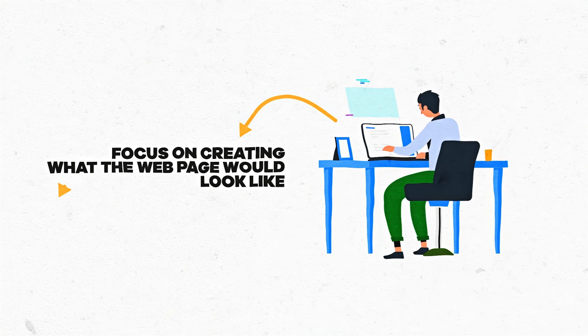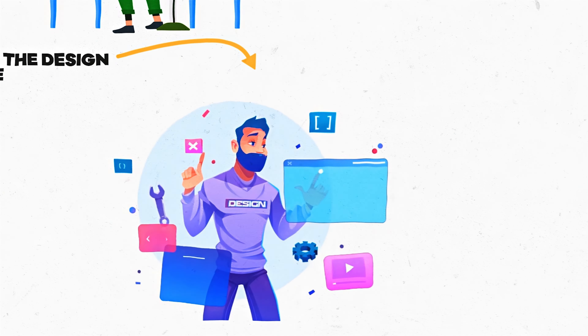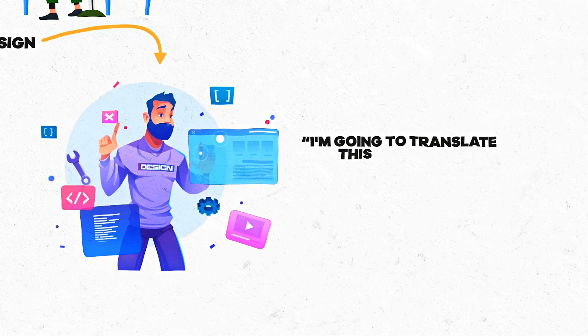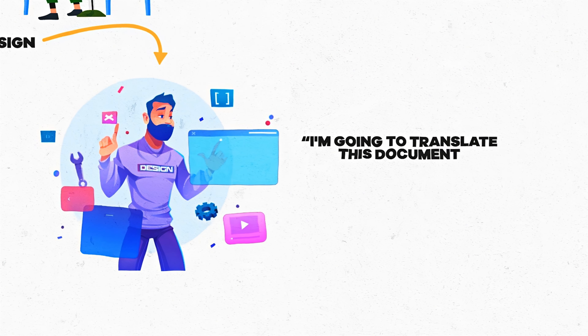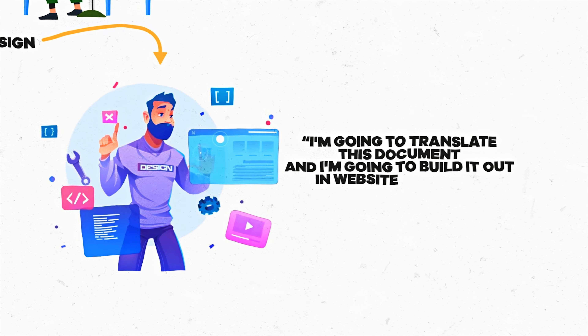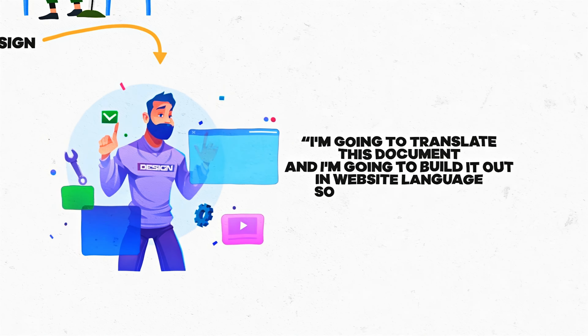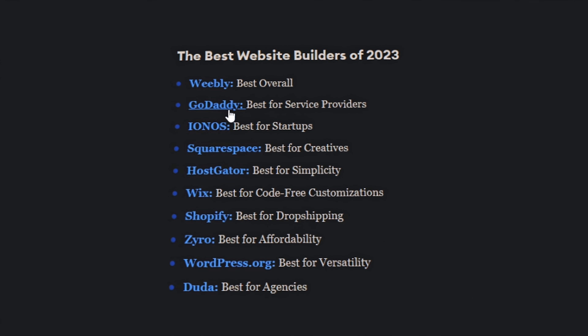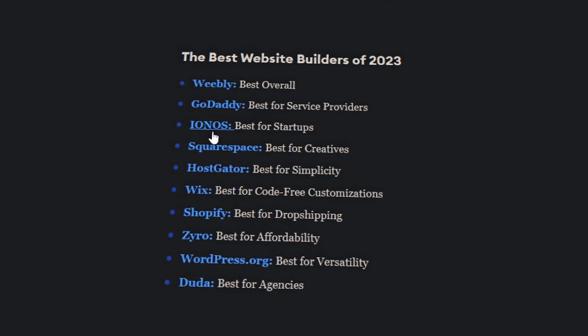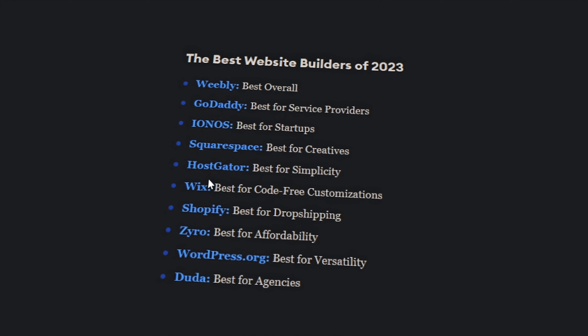It used to be that the web designer would solely focus on creating what the web page would look like — but not in web development software. They would do it in Adobe, Figma, or similar tools to create the design. Then they would hand it off to the developer, who would translate that document — basically an image — and build it out in website language so it works in a browser, writing HTML, CSS, and JavaScript for the front end, plus some sort of back-end language.